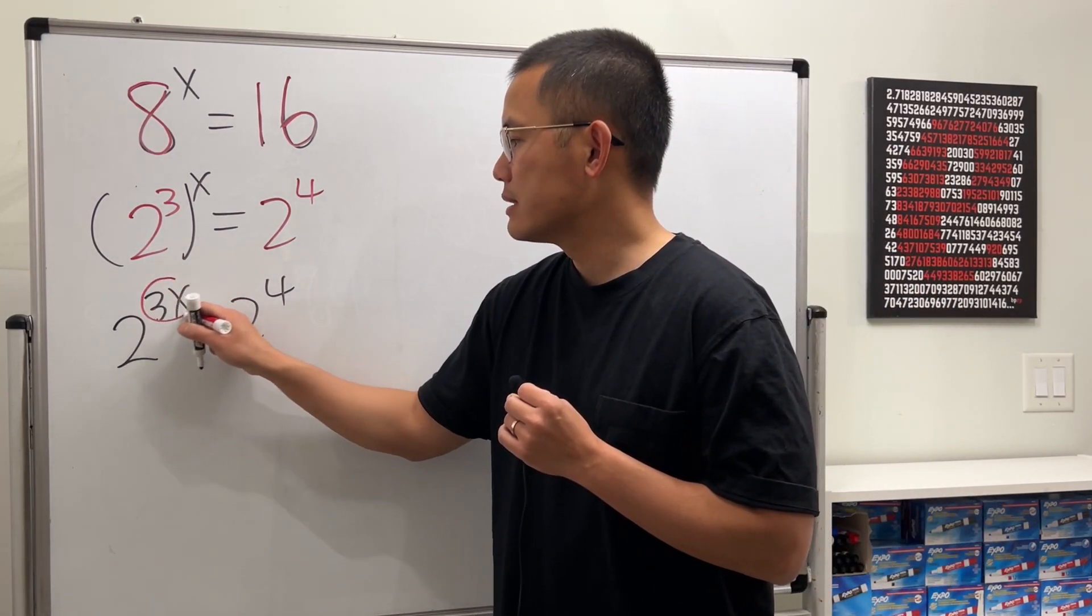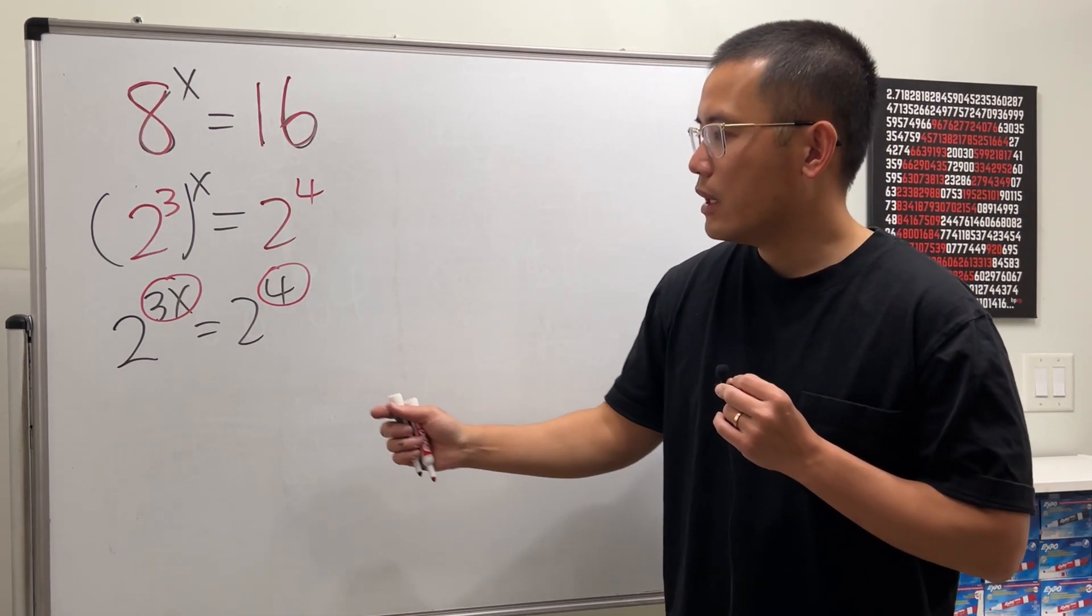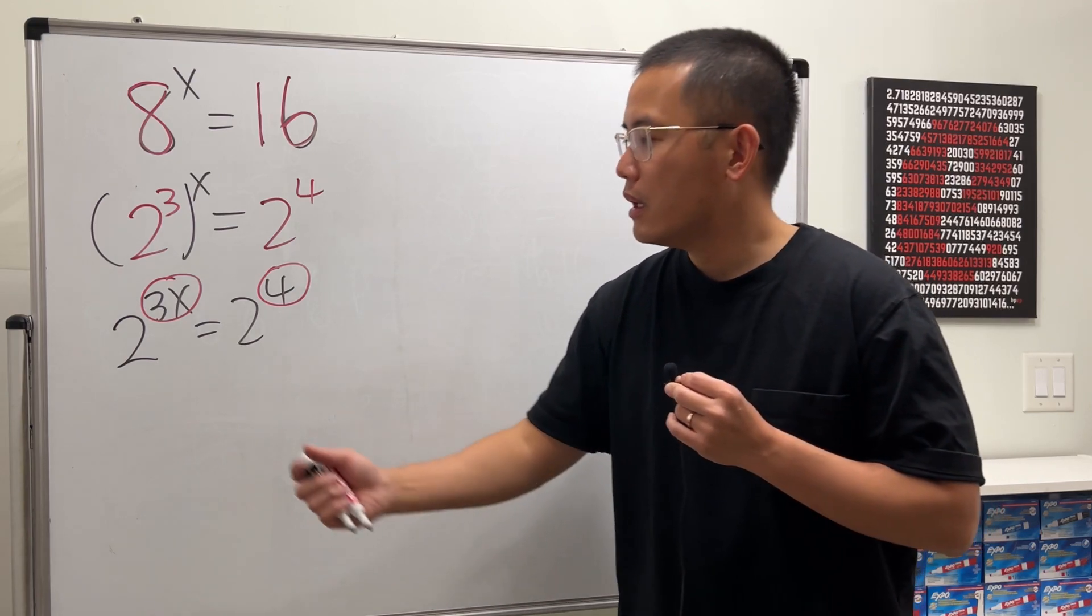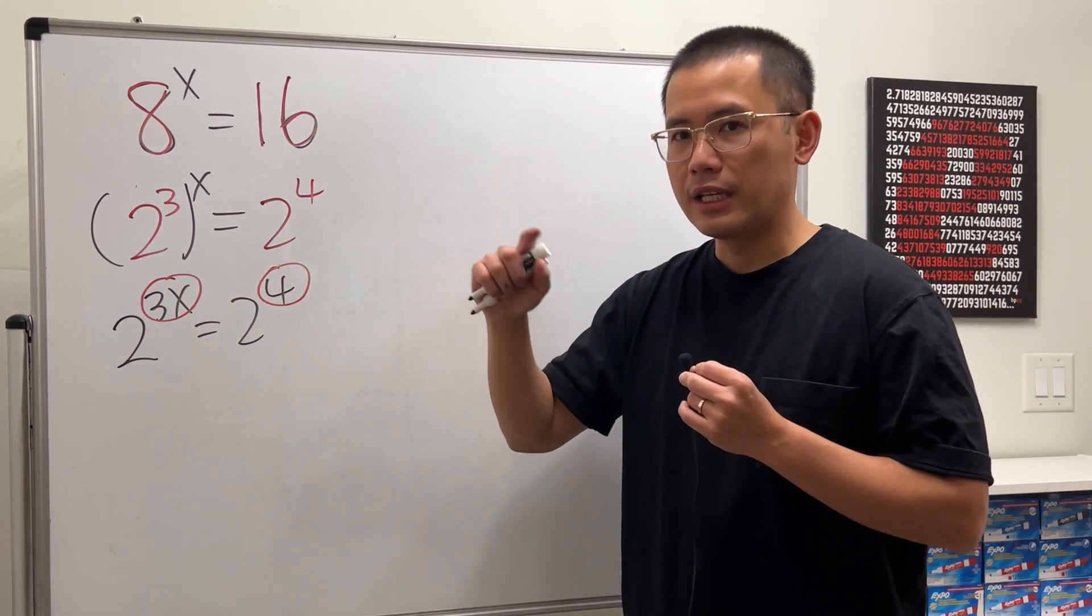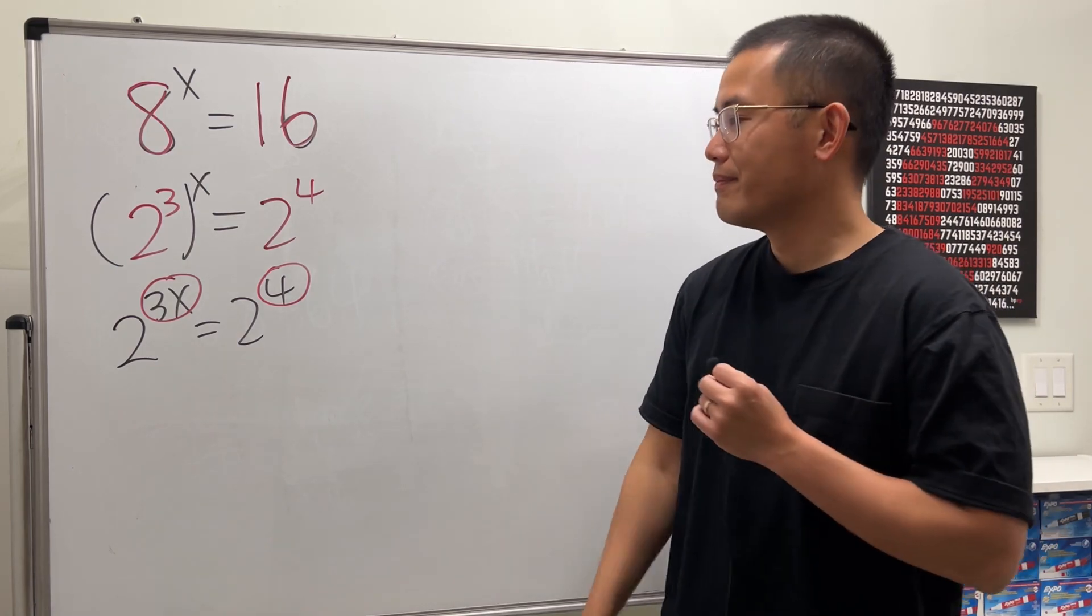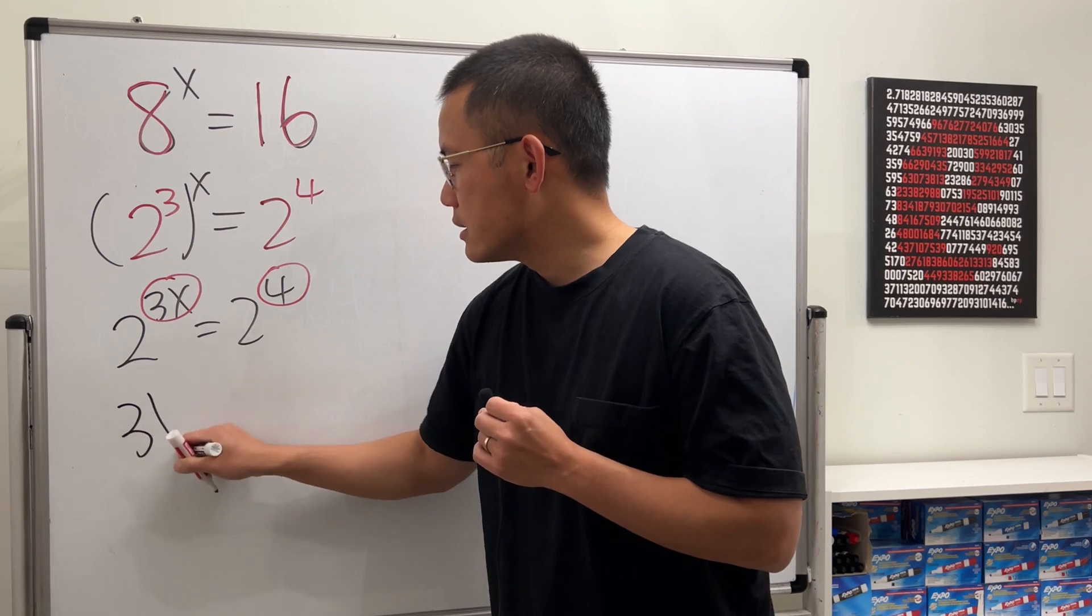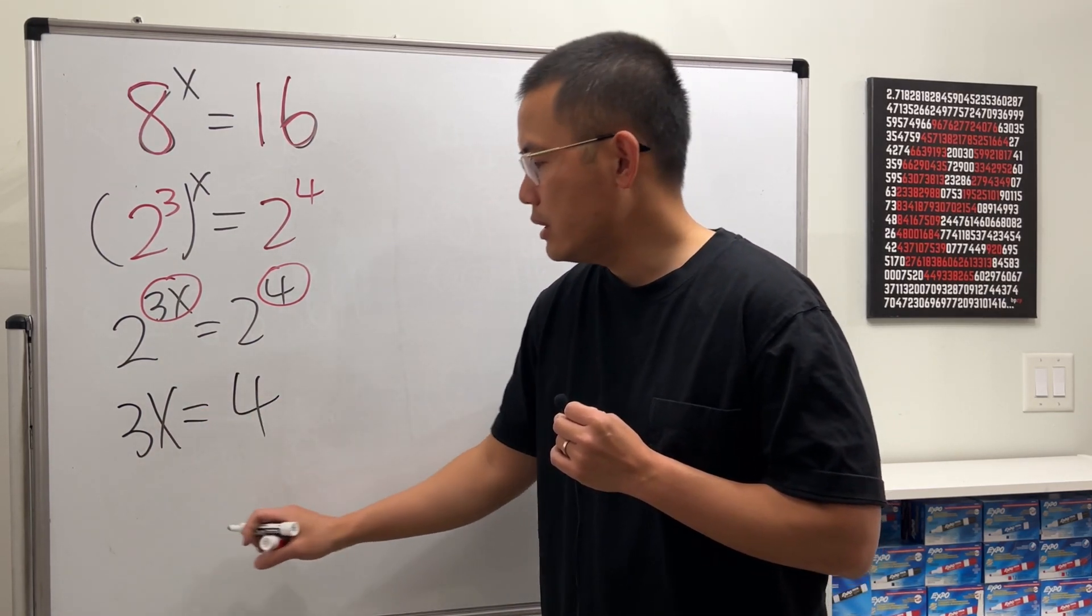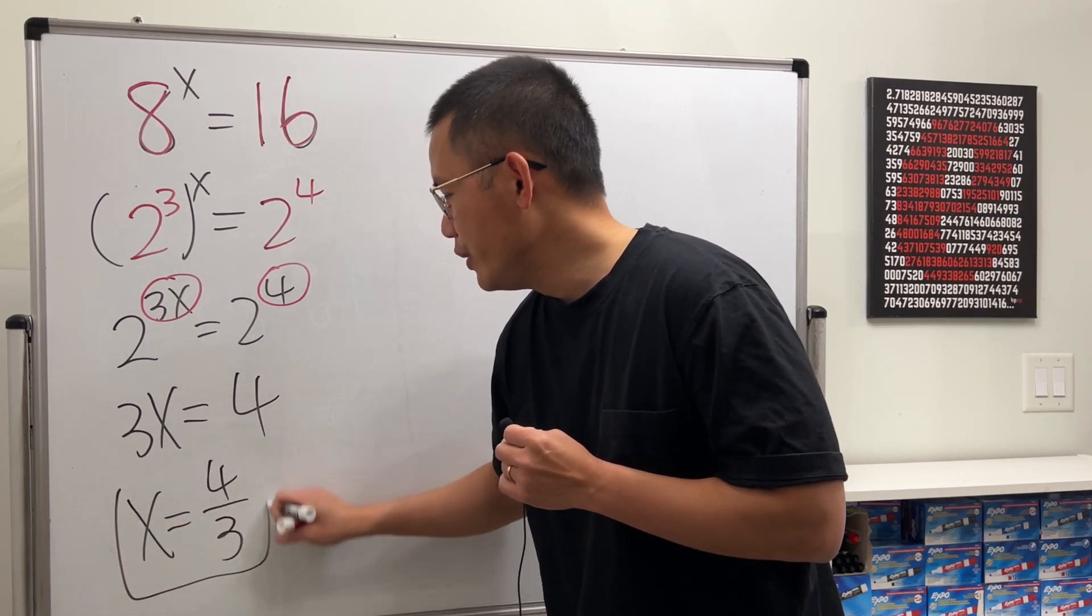In this case, that means the exponents must be equal. And the reason because is that when we have an exponential function, it's 1 to 1. Meaning, if the outputs are equal, that means the input have to be equal. Exponential functions are 1 to 1. That's why. So we can just say that 3x is equal to 4. And now we can just divide both sides by 3. x is equal to 4 over 3. And then we are done.